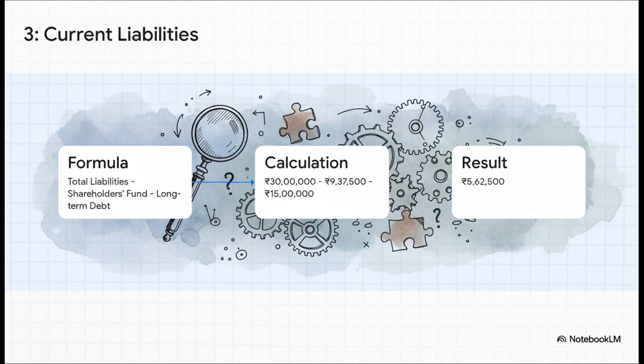Now, we can solve for a critical missing piece on the liability side. We know total liabilities have to equal total assets, that's our 30 lakhs. So, we just subtract the owner's funding we just calculated and the long-term debt we were given as an anchor. The number that's left over has to be our current liabilities, 5 lakhs, 62,500 rupees. This is what the company owes in the short term.